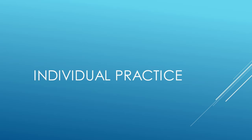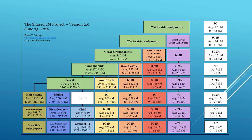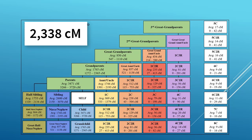Now that you've had some practice, it's your turn to determine a relationship based on centimorgans. Our next match has 2,338 centimorgans. Based on this chart, take a few moments and choose which familial relationships reflect the 2,338 centimorgans. Feel free to pause the video right now so you can take extra time to examine the chart. If you chose sibling, grandparent, or grandchild — congratulations, you are correct!